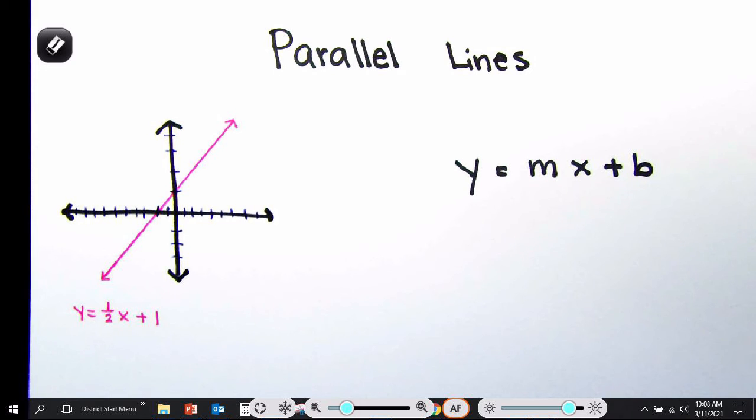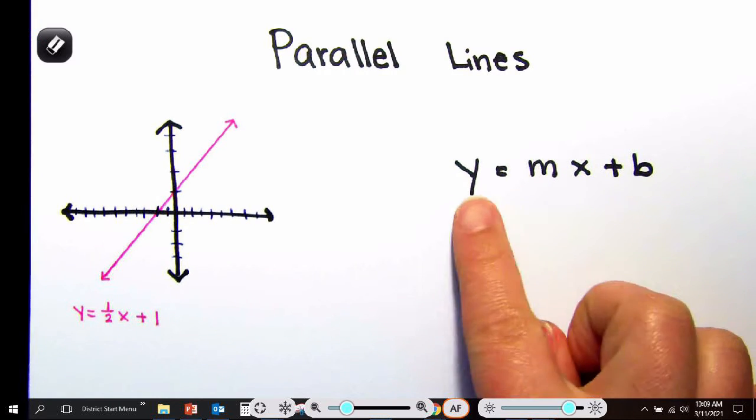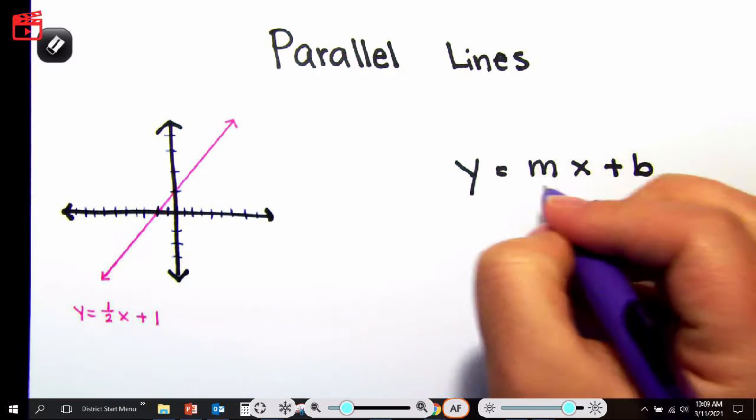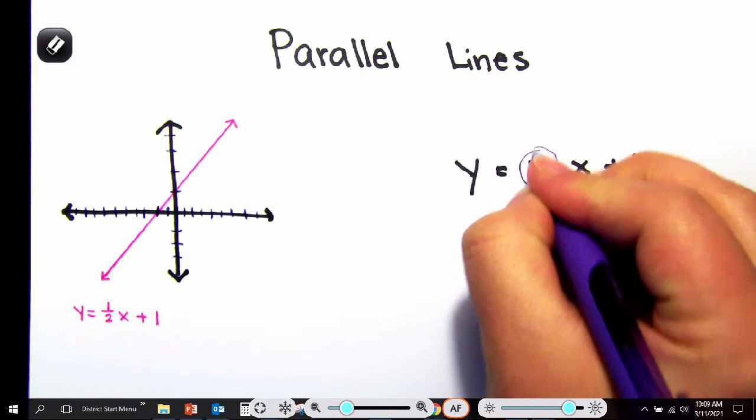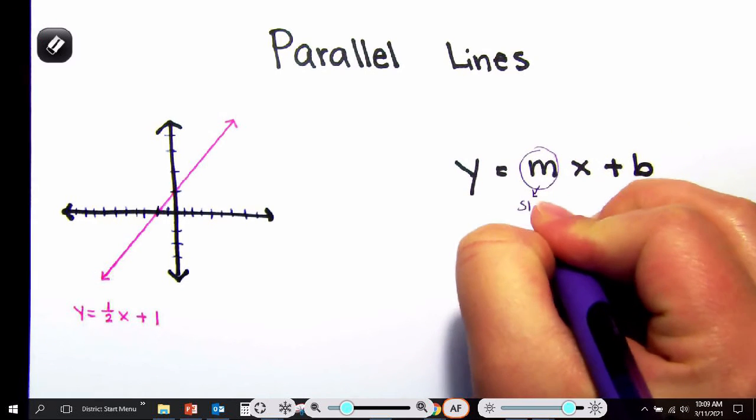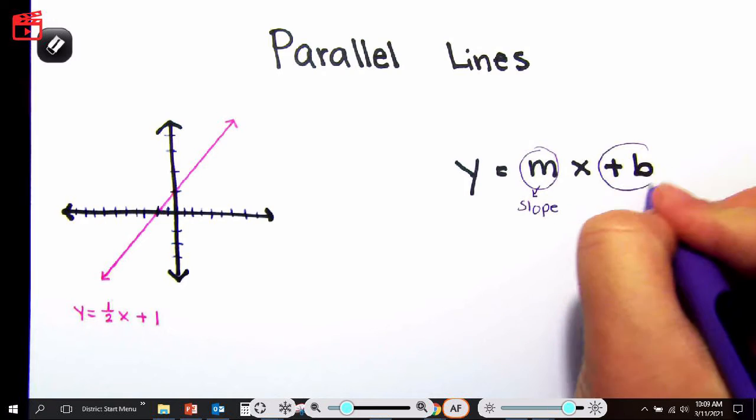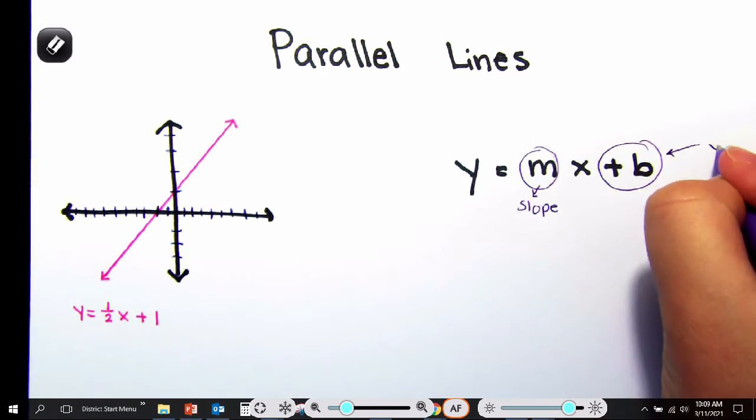So for parallel lines, we are talking about the slope-intercept form specifically. And just a reminder what that is. Here is your form of a line. So this is an equation of a line. The m represents the slope. The b represents the y-intercept.